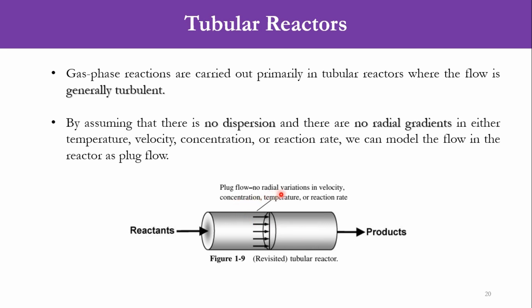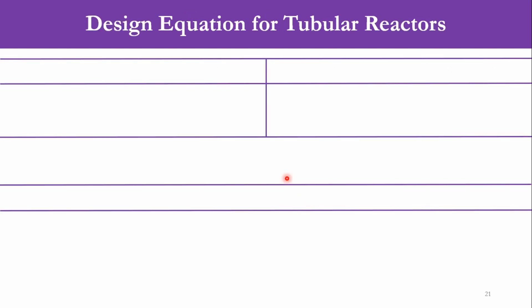We assumed there are no radial variations or no dispersions in the system — only axial variation in terms of temperature, velocity, concentration, or rate of reaction. That is how we define the tubular reactor as the plug flow reactor, as you can see in this diagram. Plug flow: no radial variations in velocity, concentration, temperature, or rate of reactions.